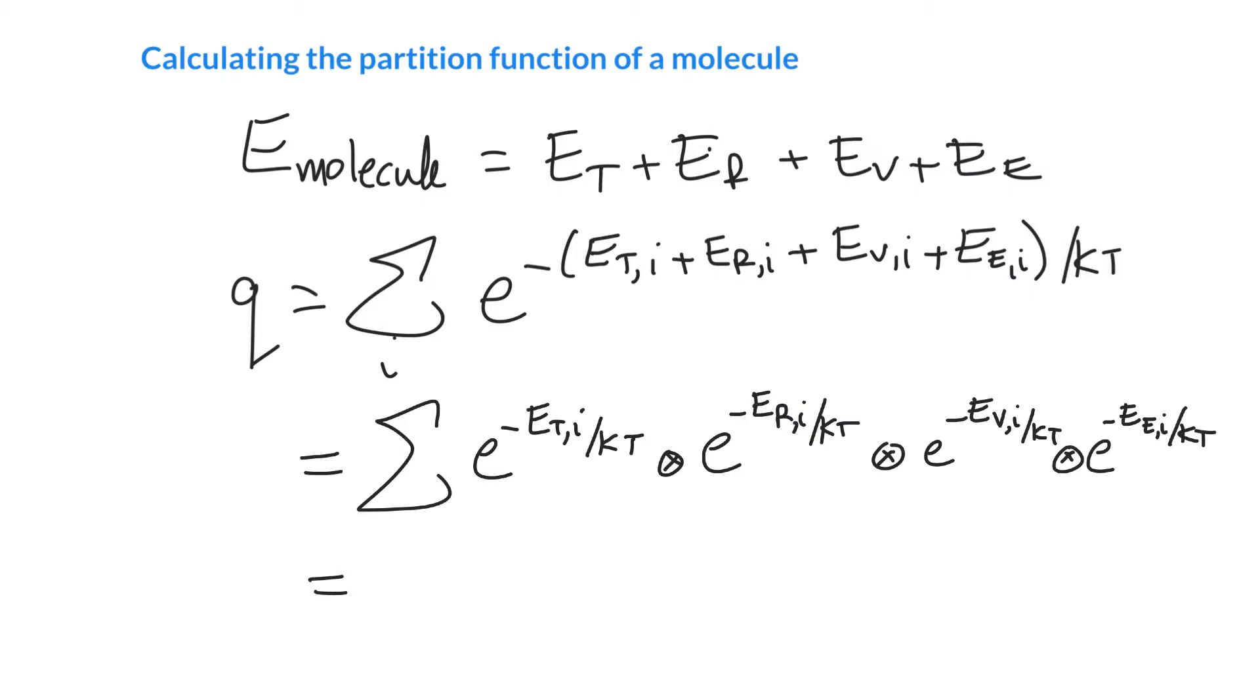And each one of these we can represent as a partition function. So we can call the first one the translational partition function, and the second one we can call the rotational partition function. And the third one we can call the vibrational. And the fourth one the electronic partition function. So the overall molecule's partition function can be thought of as a product of these four individual partition functions. It's kind of like a wave function where we can factor out the orbital motion from the spin motion. And so here we're just factoring out the translational, rotational, vibrational, and electronic contributions.